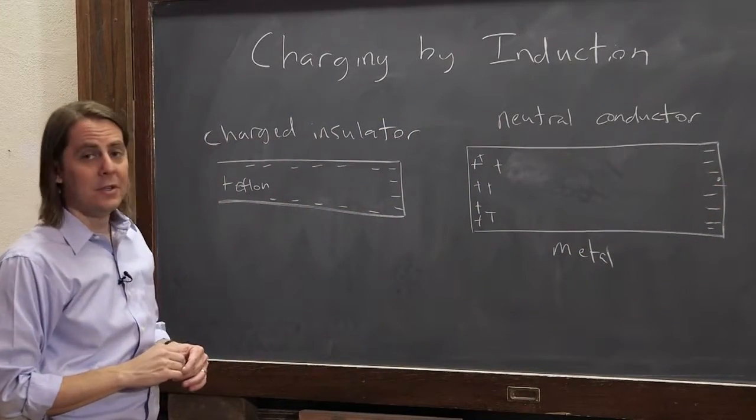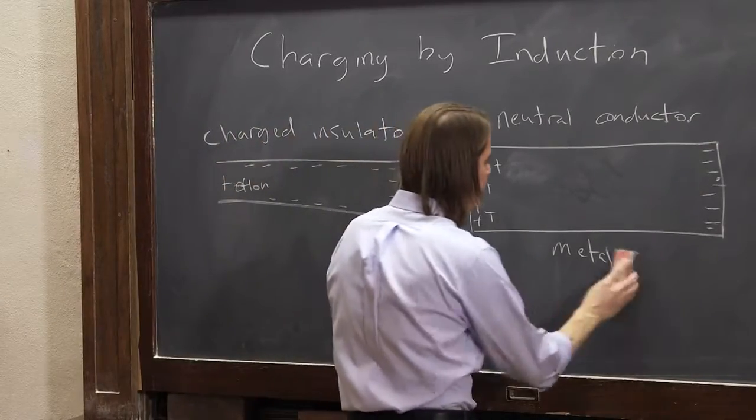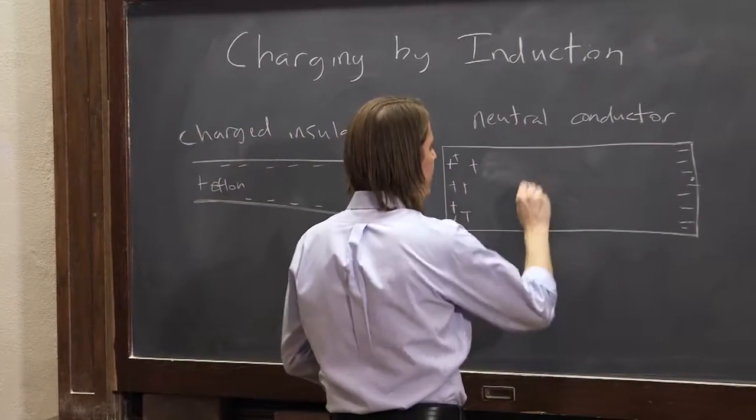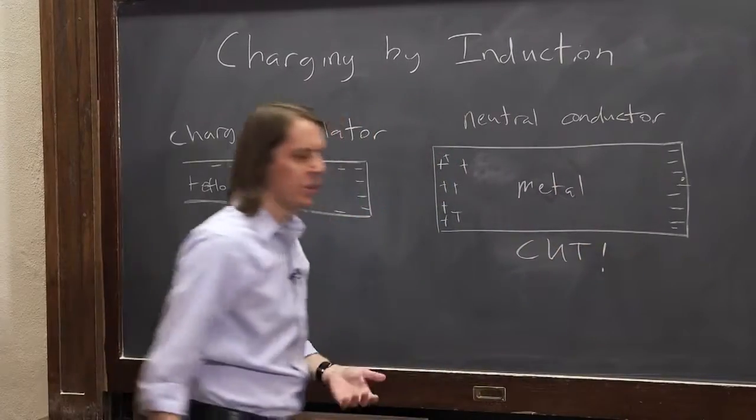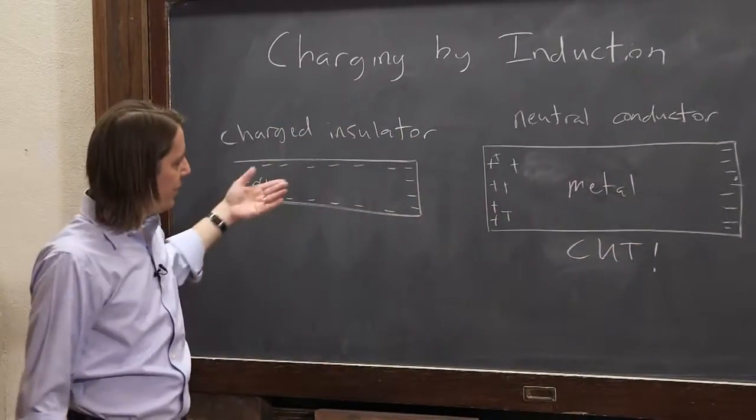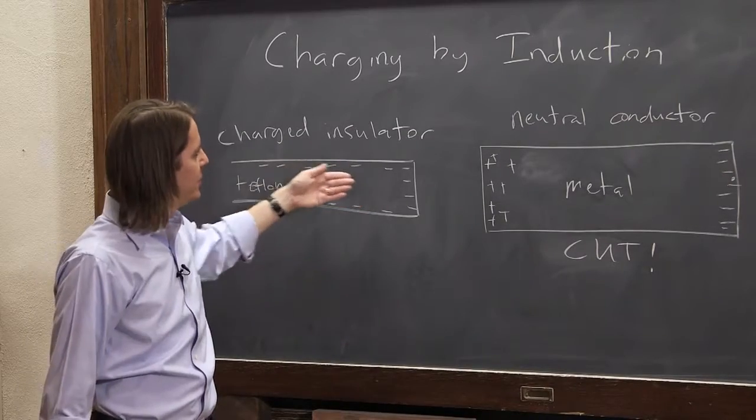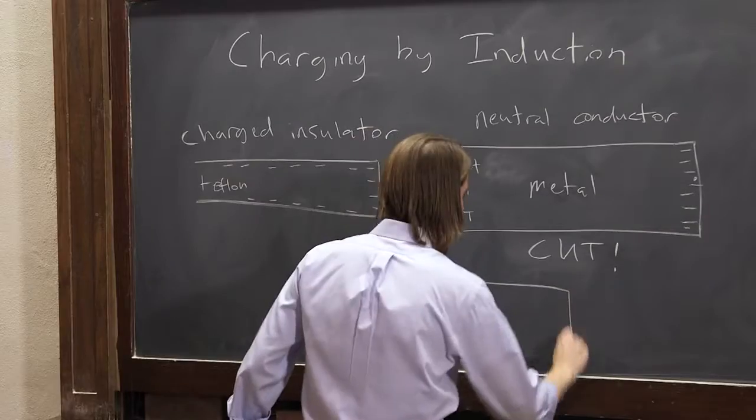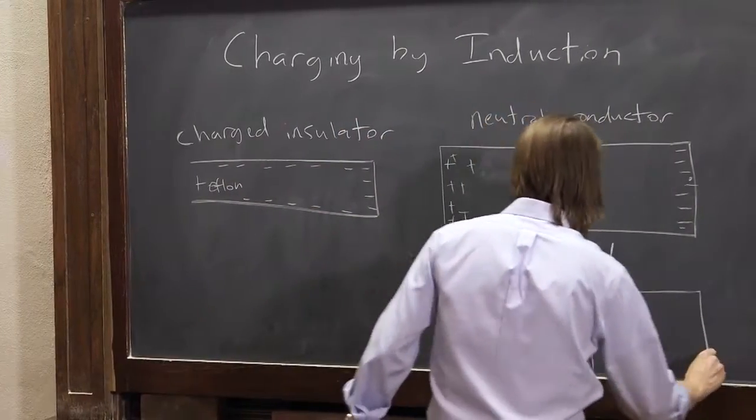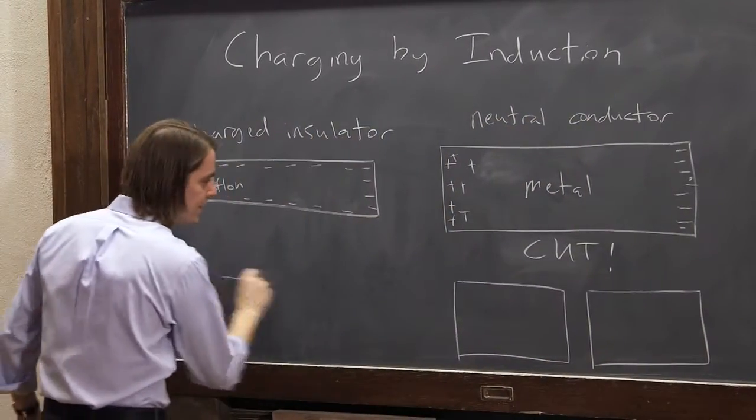So now, to charge by induction, all we have to do is one thing. We cut it. With the negatively charged insulator here, we just cut it in half. So let's cut it in half into two pieces of metal. And this is still here.